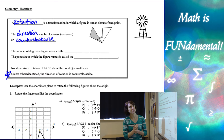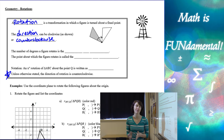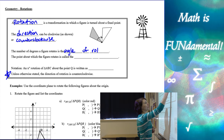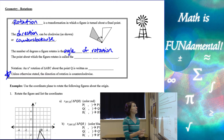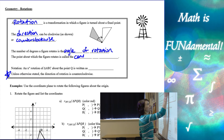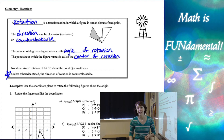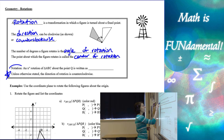The number of degrees that a figure rotates is called the angle of rotation, and the point about which the figure rotates is called the center of rotation.